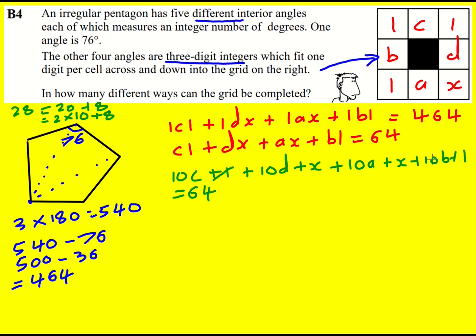We can minus 1 and minus 1 to give 62, and then I'm going to factorize out the 10. So I get 10 lots of a plus b plus c plus d plus 2x is equal to 62, and then I can divide through by 2. And we've got a relationship between these five things that is a little bit simpler than what we had at the start.